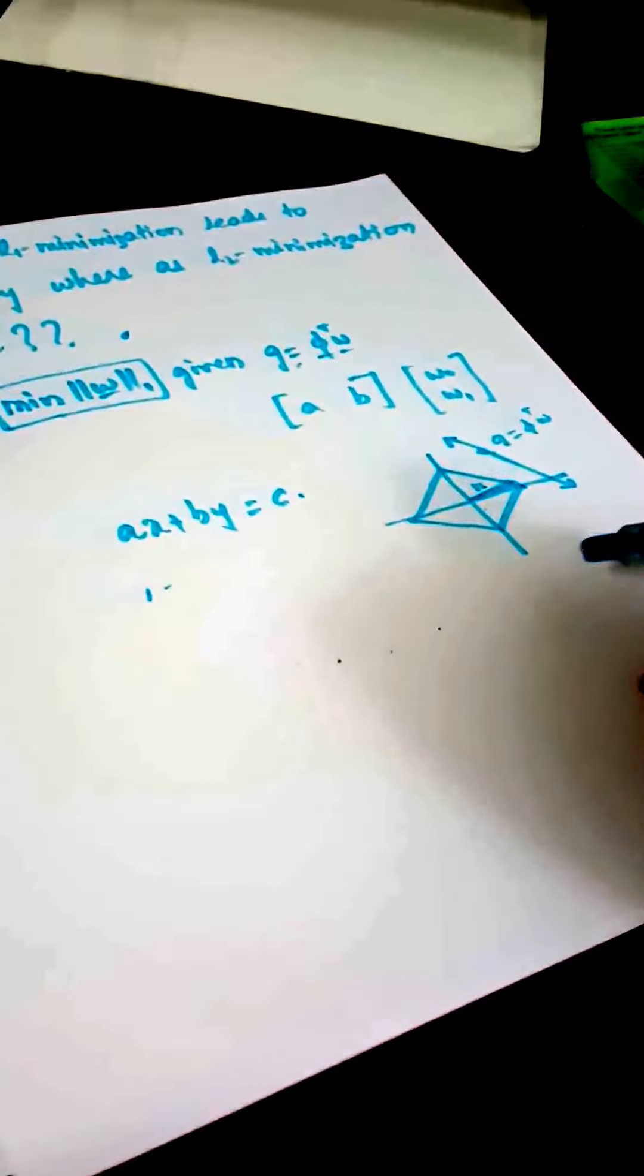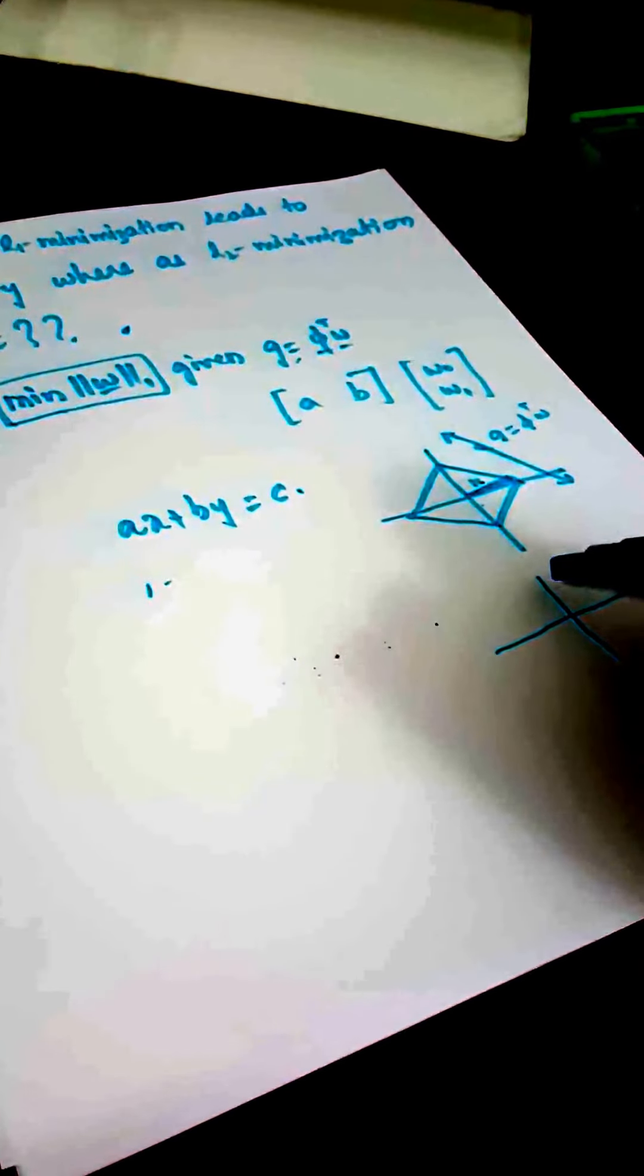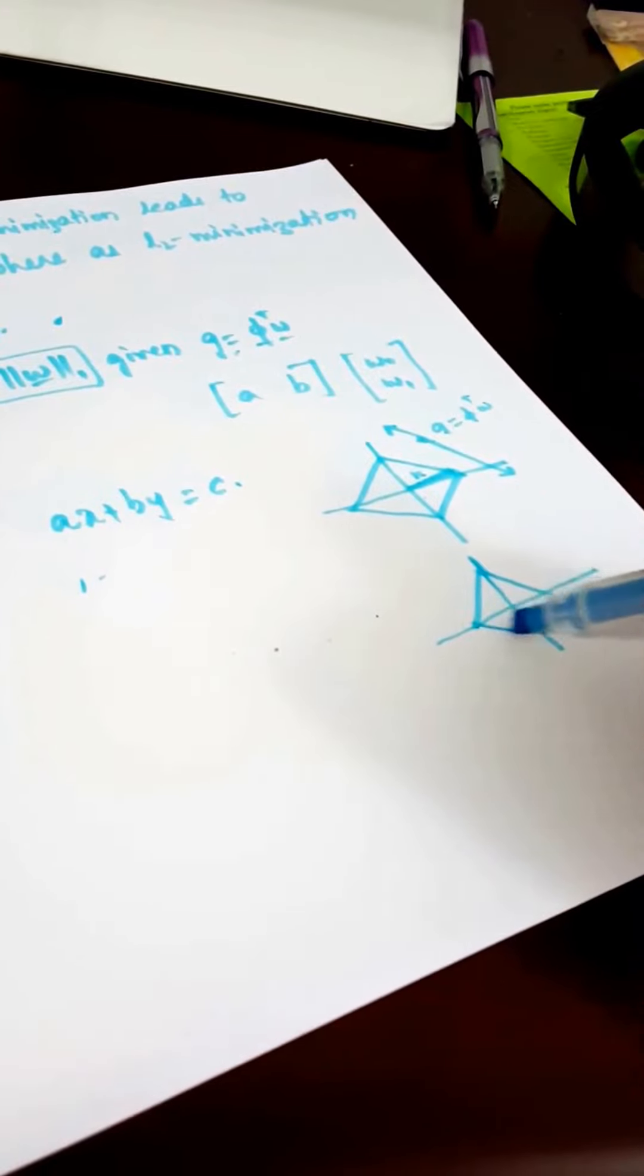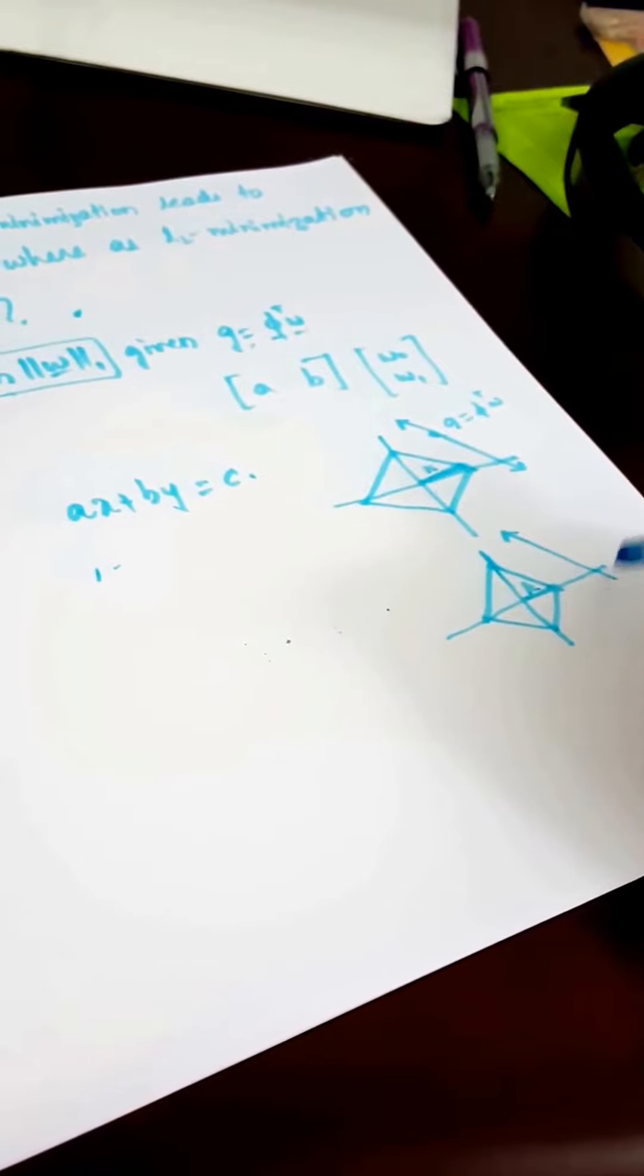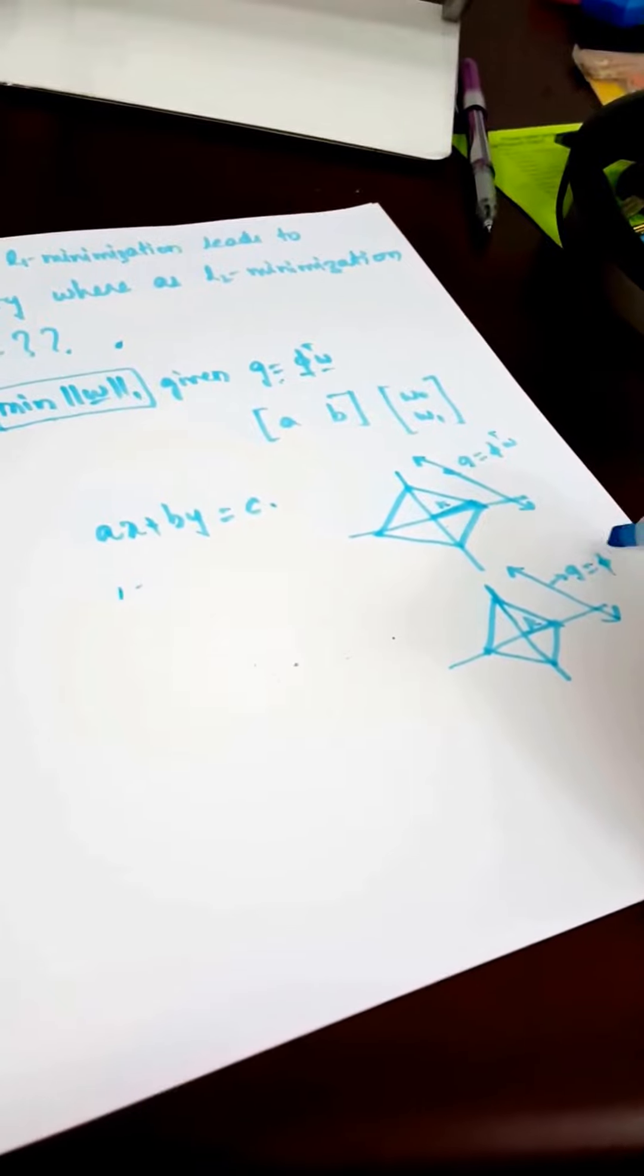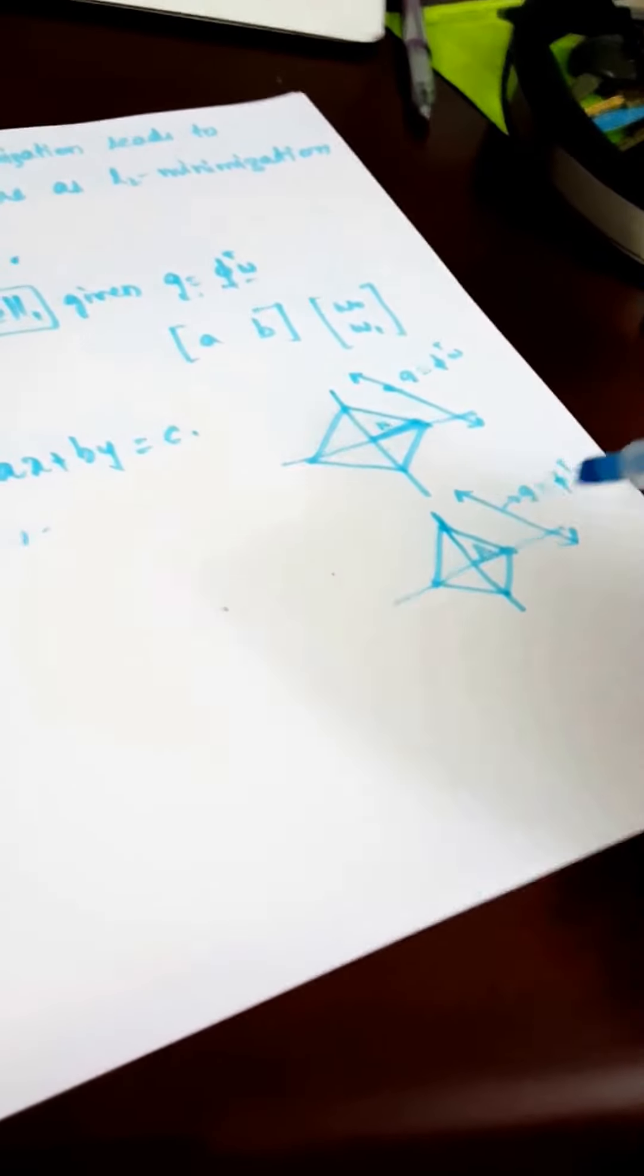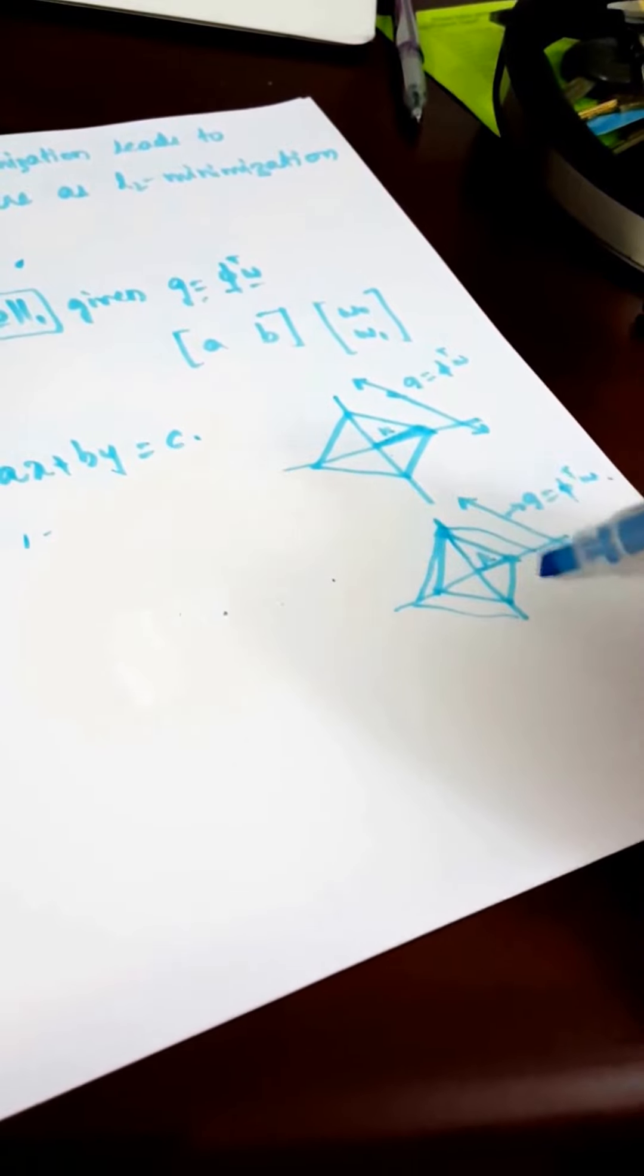So I need to find my minimum value of K for which it coincides with the line equation. What I do is I keep on increasing my K value so that my diamond keeps on increasing.